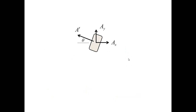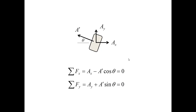Now, let us write down equilibrium equations. I will denote the forces acting on the glider at A by AX, AY, and A'. Sum of the forces on X, sum of the forces on Y. Sum of the moments about A is trivial because all the forces intersect the point, and therefore all of them have zero moment arms, and therefore the moment equilibrium gives us no interesting information about the forces at A.